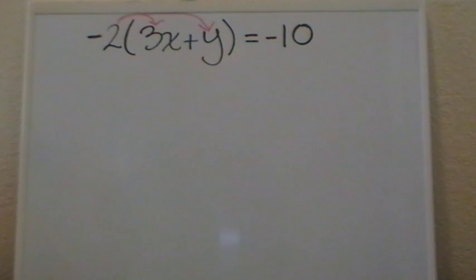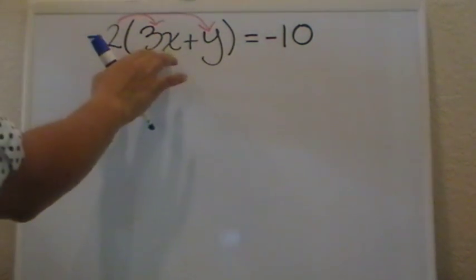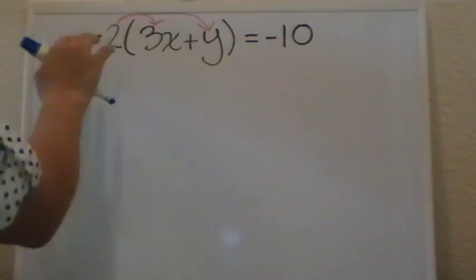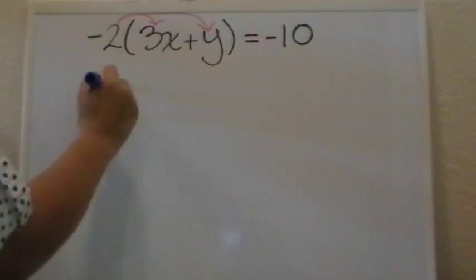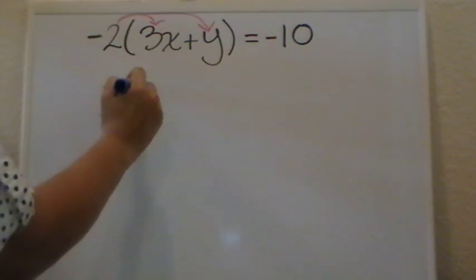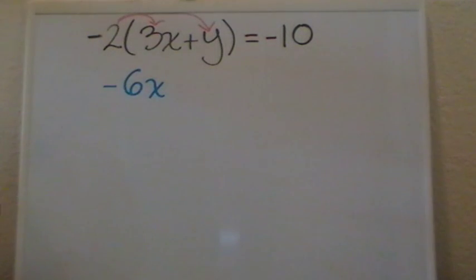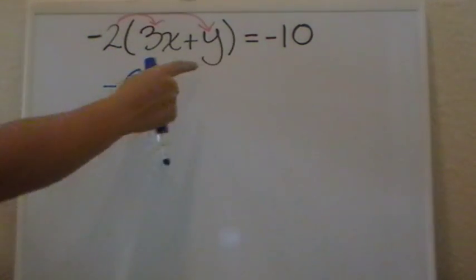We're going to start by doing this multiplication. Negative 2 times 3x will give me negative times a positive, negative 2 times 3 is 6, and I drop the x. Now, I have to do everything all over again for the second one, which in this case is y.